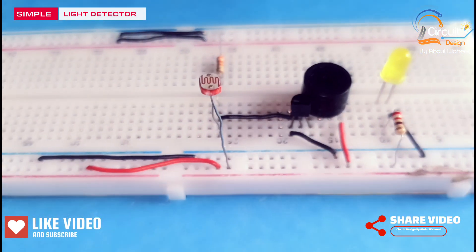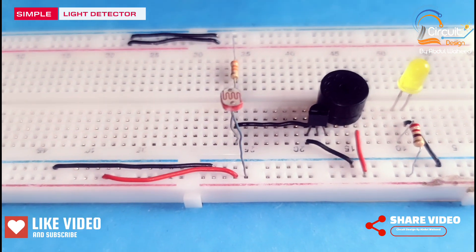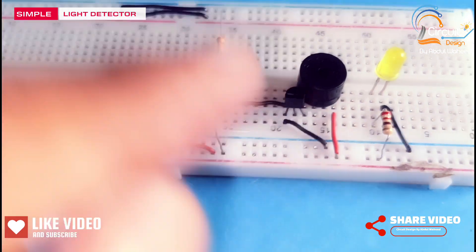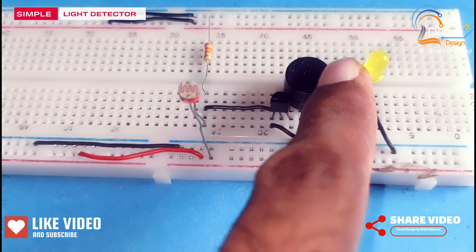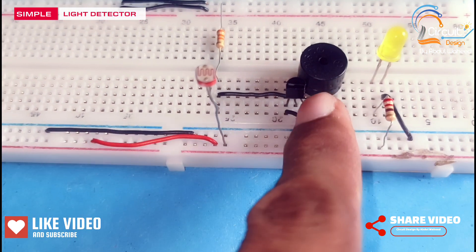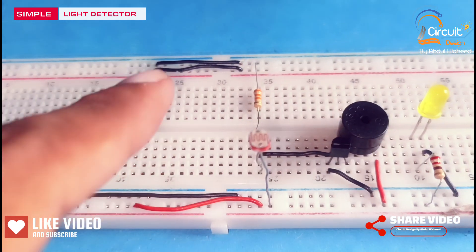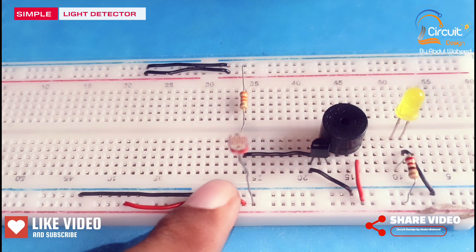Friends, in this circuit I use resistor of value 220 ohm, yellow LED for power indication, buzzer, a transistor 2N3904, resistor of value 33k, and LDR.